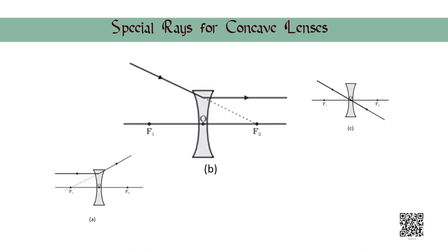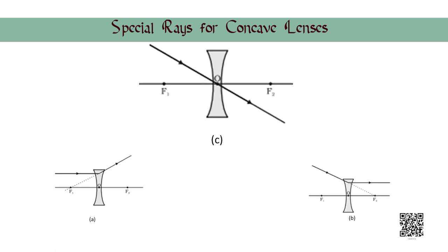A ray of light appearing to meet at the principal focus of a concave lens after refraction will emerge parallel to the principal axis as shown in figure B. A ray of light passing through the optical center of a concave lens will emerge without any deviation. Let us now try making the ray diagrams in case of a concave lens.